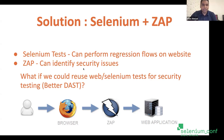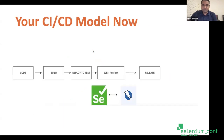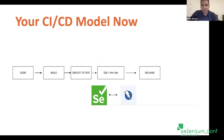That is the solution which can solve these two problems: the problem of less coverage and the problem of reducing duplicate effort. The CI/CD model right now is that after the code is deployed to test, you are doing end-to-end testing and penetration testing almost together. Your Selenium and ZAP are in sync with each other, and you are able to identify issues together and do bug fixes and release.